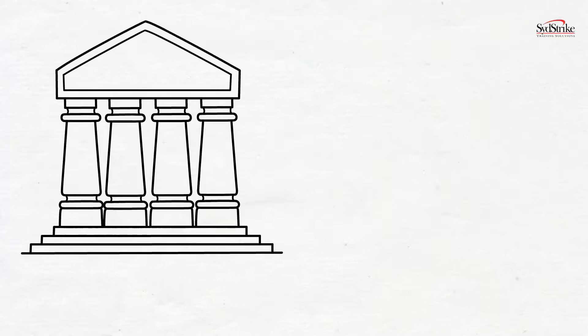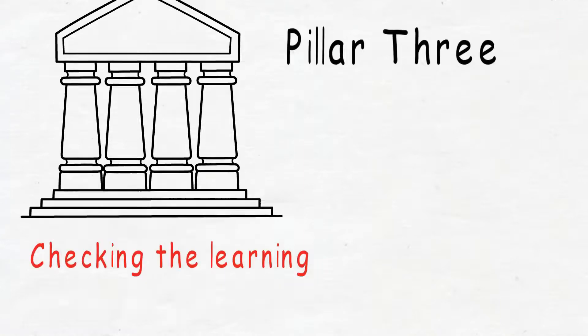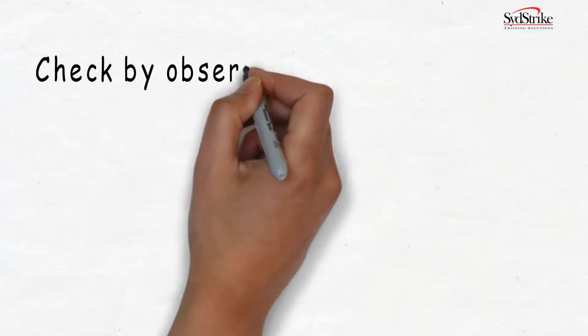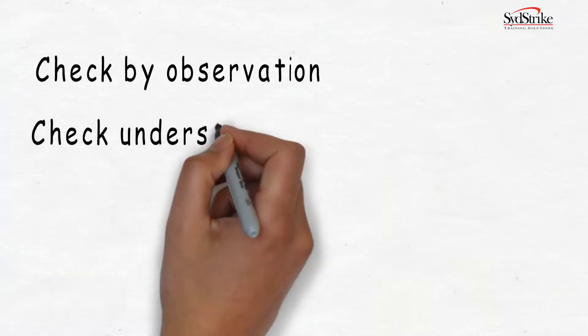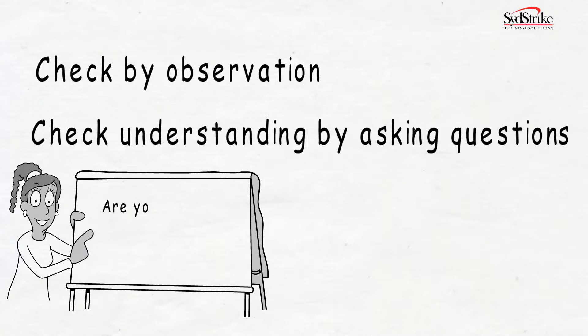This takes us to pillar three, checking the learning. When the training is completed, a good trainer will always check the learning in some way or other. If you need a hard check, for example, to be sure that people can perform a task, then ideally you should observe them performing the task. And also check that they understand what they are doing and why by asking questions or providing a written test. When delivering train-the-trainer courses, I observe my trainees delivering a training session. And I need to be happy that they are able to use these four pillars successfully before I will sign them off and issue a certificate.